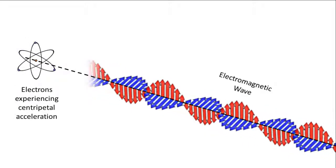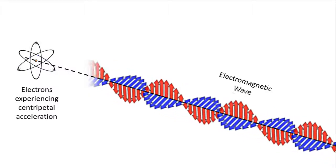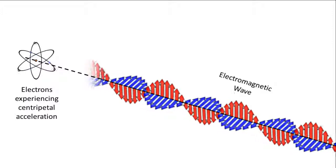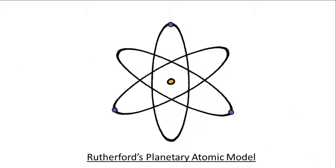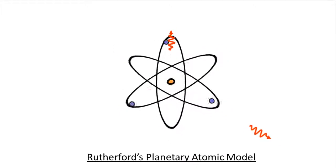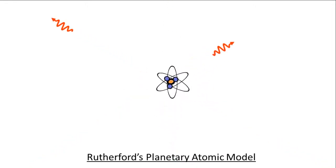The planetary model now faces a technical difficulty. The electrons orbiting the nucleus are electric charges undergoing centripetal acceleration, so they should be releasing electromagnetic radiation. This will cause them to lose energy continuously. If this is true, the electrons should spiral in towards the nucleus and crash.